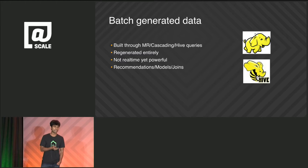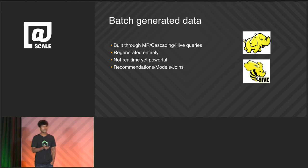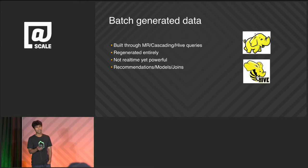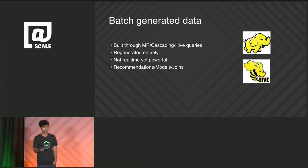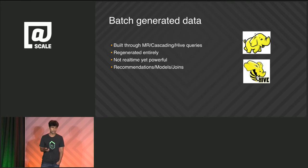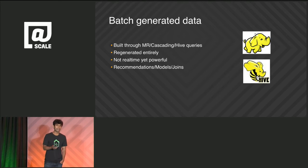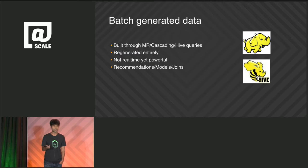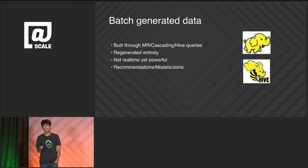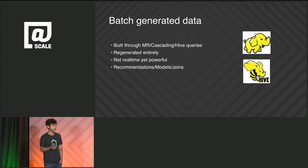You don't have a constraint on how fast you need to process, and there are many applications of this at Pinterest like recommendations, machine learning models and features, and joins of various pieces of data.